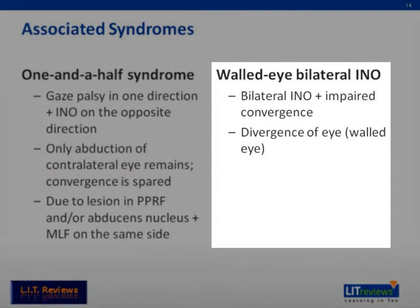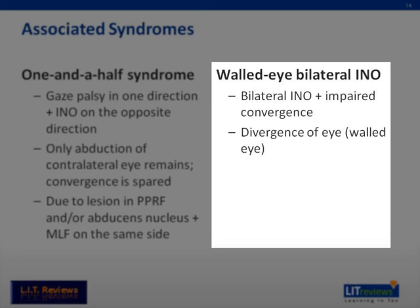The wall-eyed bilateral INO is another variant, where there is bilateral INO. However, in this case, convergence is affected, and the eyes are horizontally divergent in primary gaze, giving the impression that they are looking at opposite walls. Hence the name, wall-eyed.